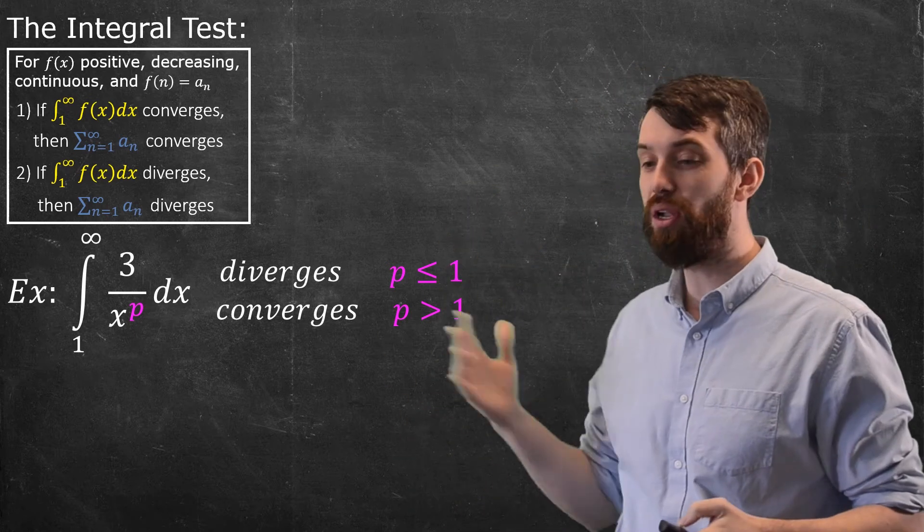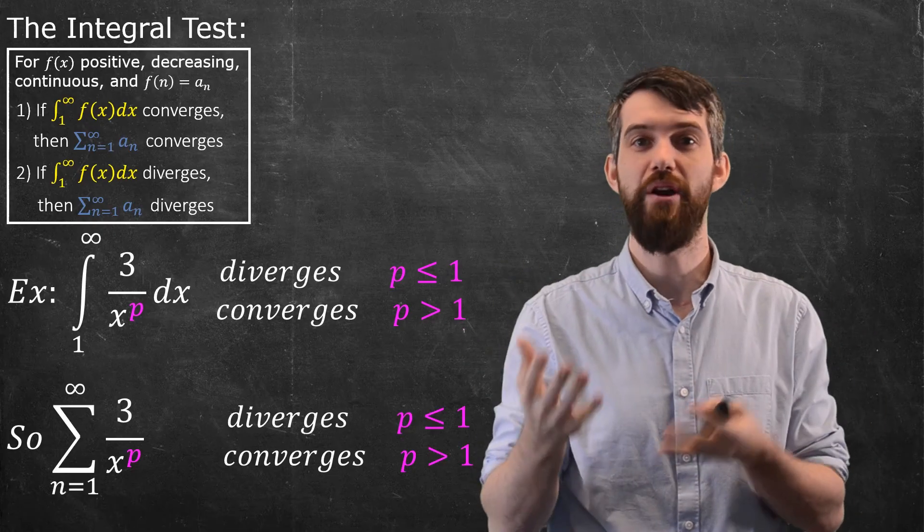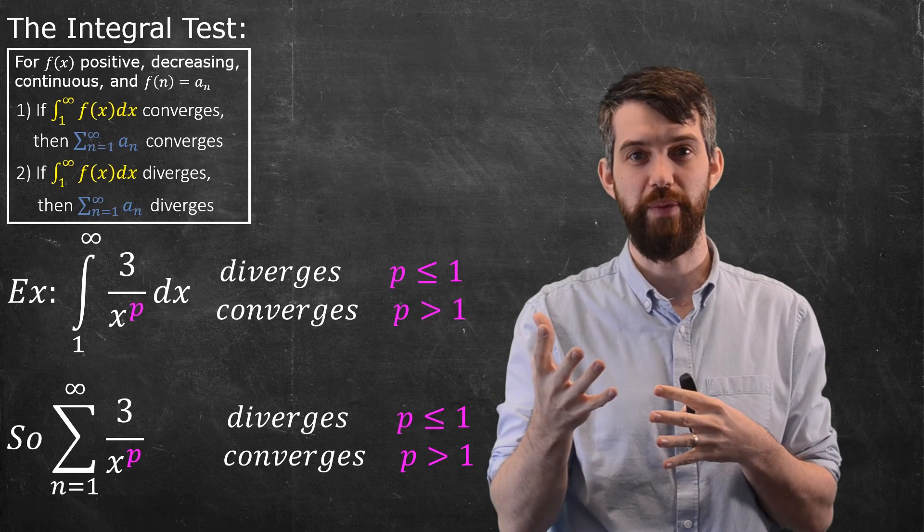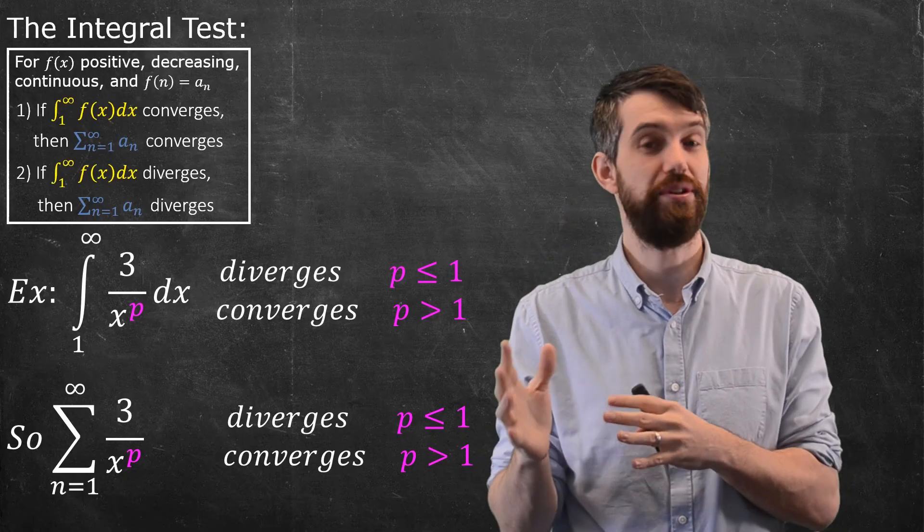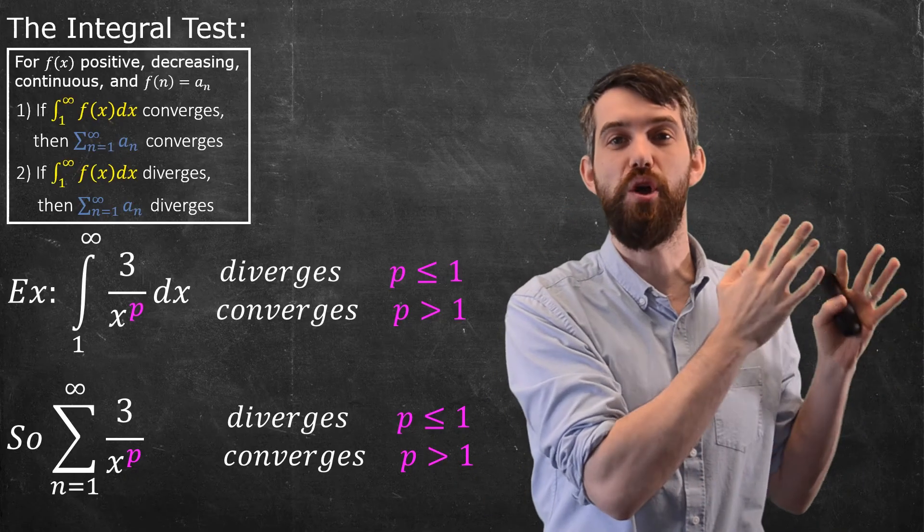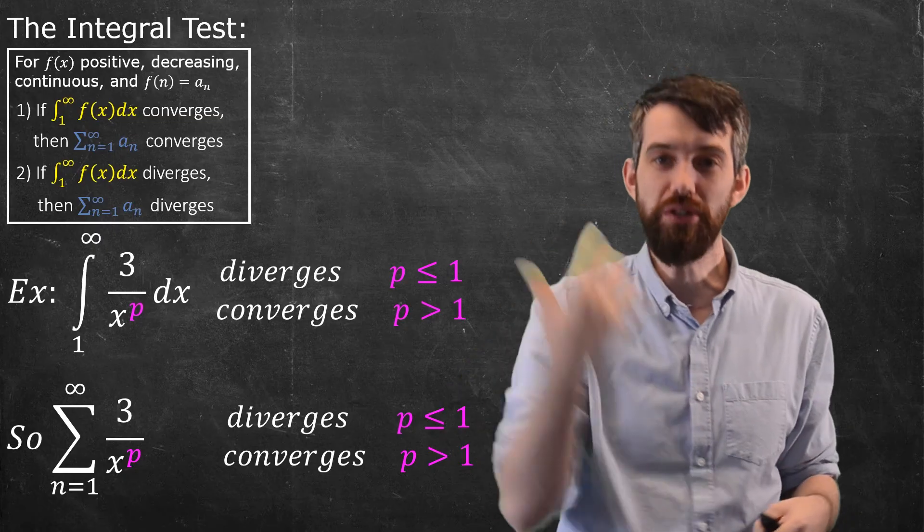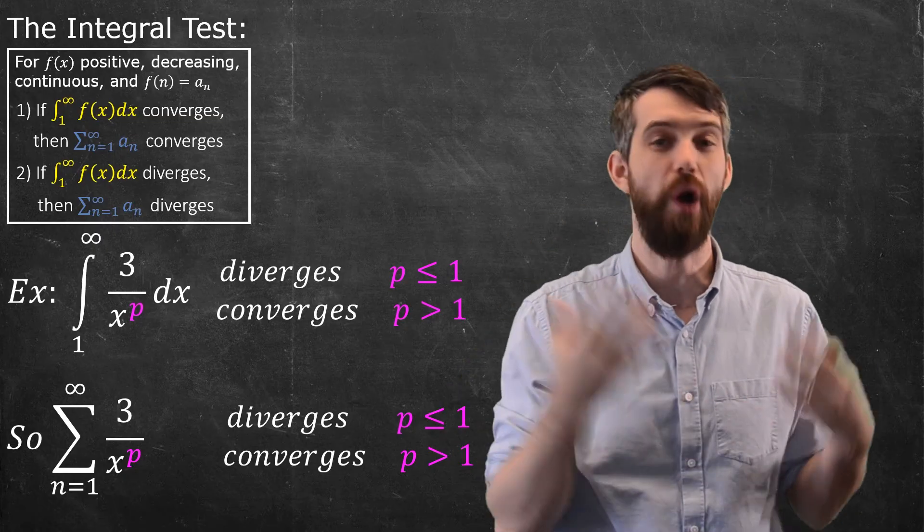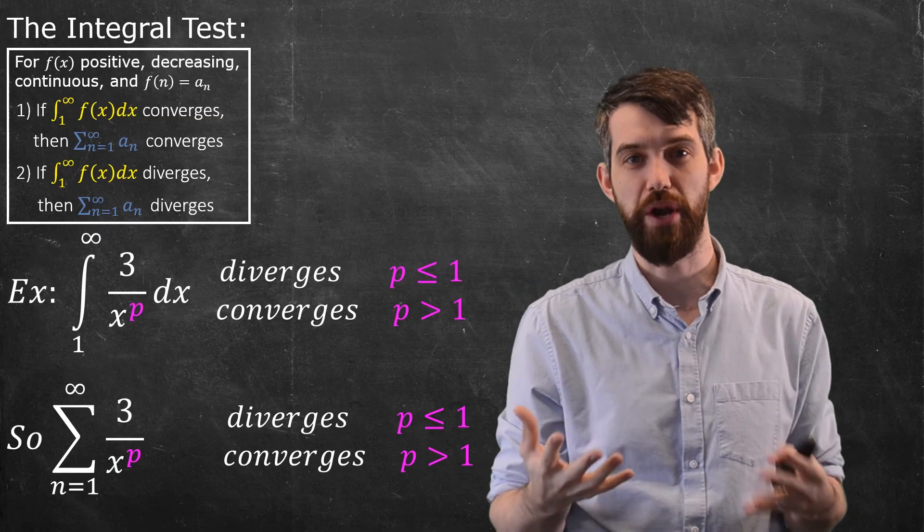And so the point here is that that so-called p-test for improper integrals, we now get another p-test for the corresponding series. That is, if I go and look at the series, the sum of, again, the 3 doesn't matter, but 3 over xᵖ, well, this converges or diverges exactly when the corresponding improper integral does. So it also diverges for p ≤ 1 and also converges for p > 1.